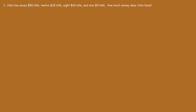This problem involves multiplication and addition. Let's start with the largest bills. He has seven $50 bills. What's seven times 50? Well, we know that seven times five is 35, so the total is going to be 350 — you just add a zero.